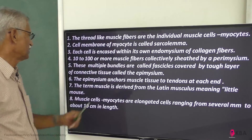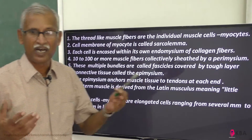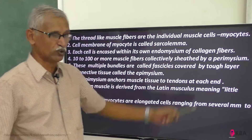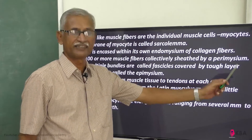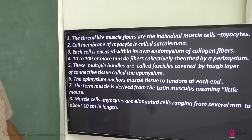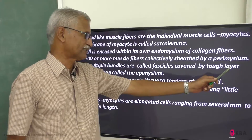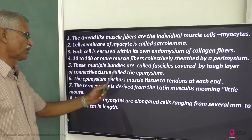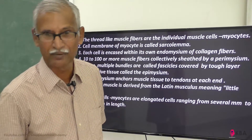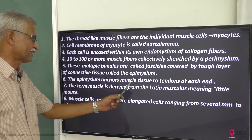100 or more muscle fibers collectively form a bundle sheathed together, called perimysium. These multiple bundles are called fascicles. They are covered by a tough layer of connective tissue called epimysium. So the three layers are: epimysium, perimysium, and endomysium.